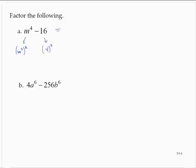So I have a difference of squares. So I'll write this as m squared plus 4 times m squared minus 4.